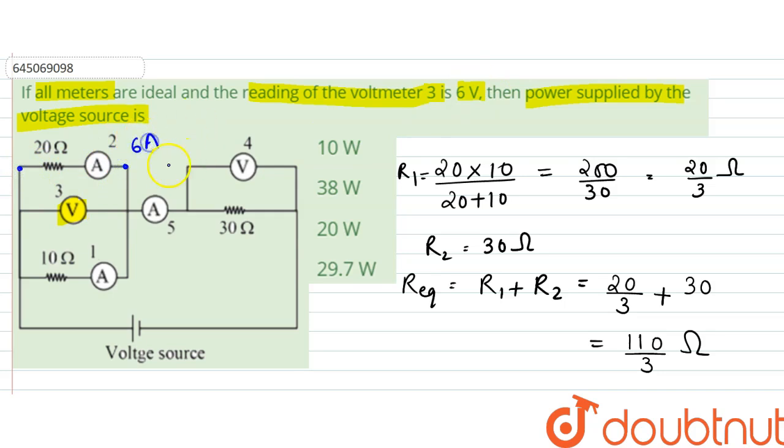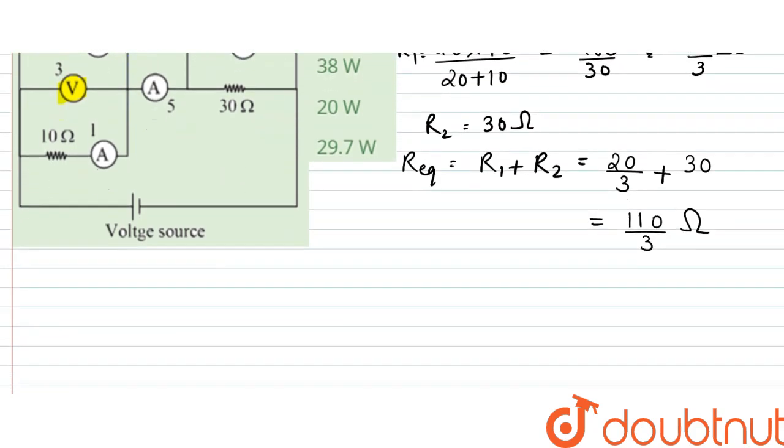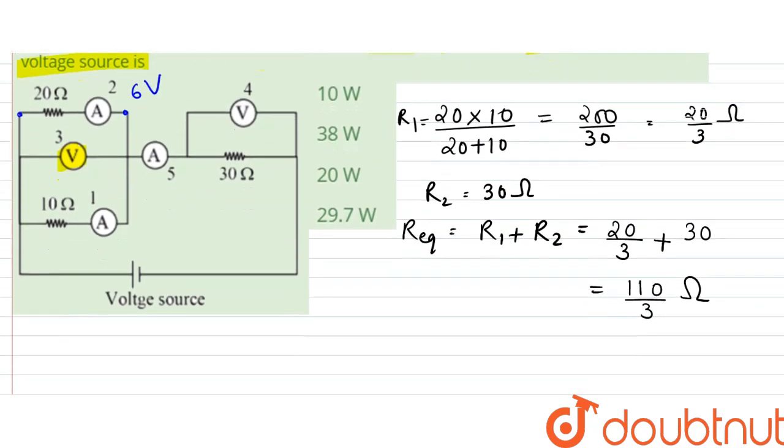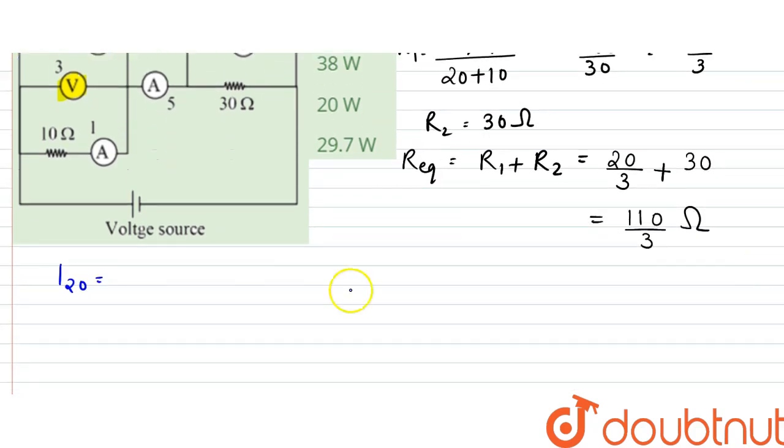The current passing through the 20 ohm would be equal to V by R, that is 6 by 20, which is equal to 3 by 10, 0.3 amperes. And current through 10 ohm similarly would be equal to 6 by 10, which is 0.6 ampere.